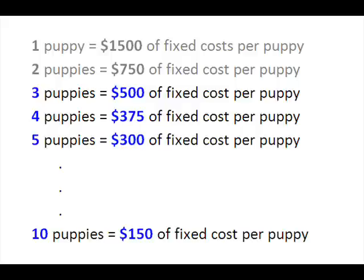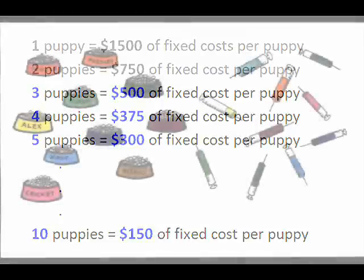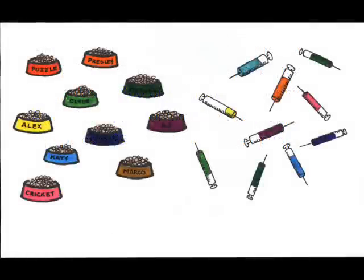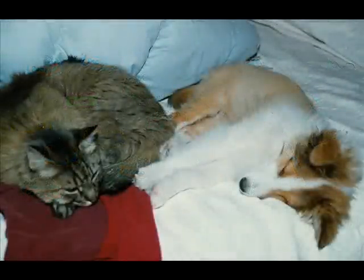So from a fixed cost per unit perspective, the more the better. But as I increase my output, what's happening to my variable costs? Think once again to the puppy example. Large litters — that is, lots of puppies — cost more in food, vet care, etc. But there are also increased health risks to the mother and the puppies.